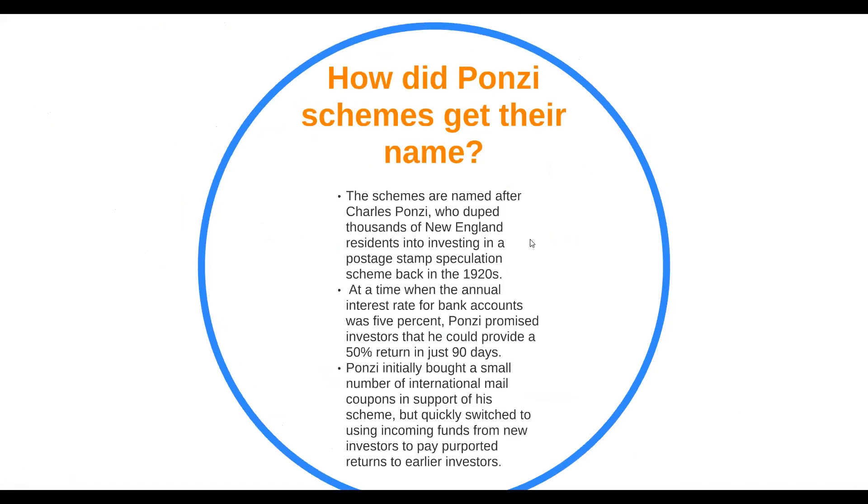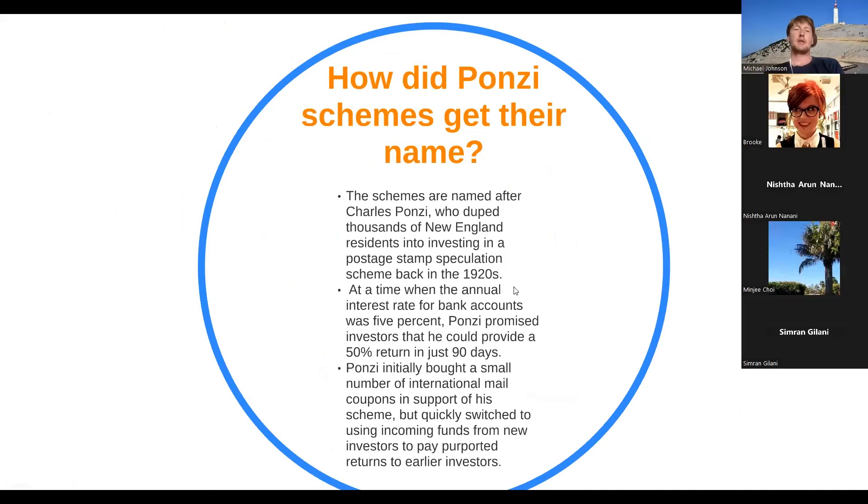So how did Ponzi schemes get their name? The schemes are named after Charles Ponzi, who duped thousands of New England residents into investing in a postage stamp speculation scheme back in the 1920s. At a time when the annual interest rate for bank accounts was 5%, Ponzi promised investors that he could provide a 50% return in just 90 days. Ponzi initially bought a small number of international mail coupons in support of his scheme, but quickly switched to using incoming funds from new investors to pay purported returns to early investors.